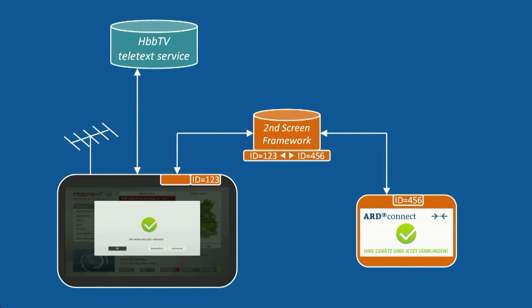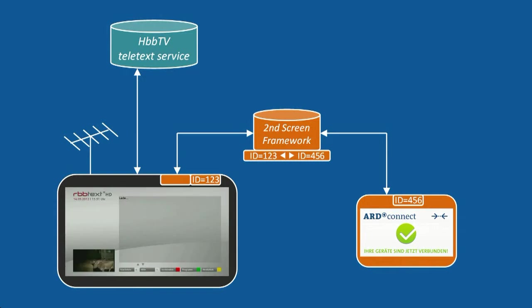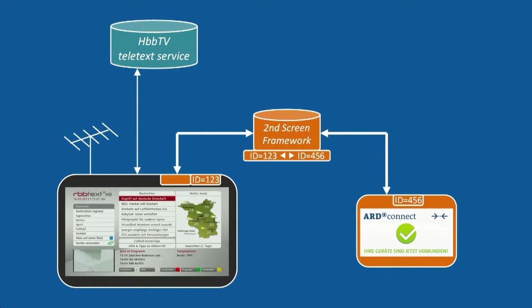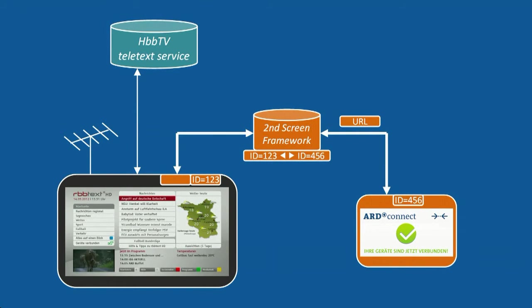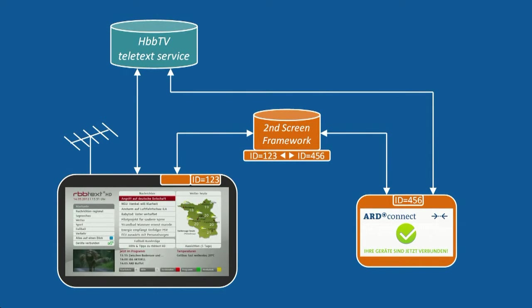Now a persistent coupling of both devices is achieved. On the TV set, the Teletext application is started again. Using the still active component of the framework on the TV set, the HbbTV Teletext application can send the URL of a mobile version of the Teletext to the launcher application on the tablet. This makes use of active connections from both devices to the framework server.